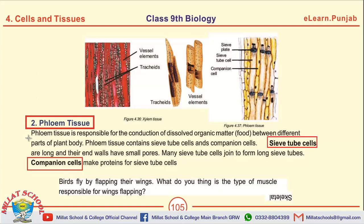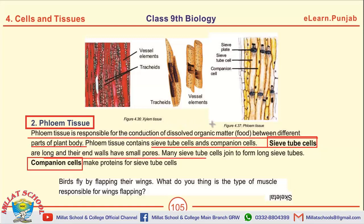The last tissue we will discuss today is phloem tissue. Phloem tissue is responsible for the conduction of dissolved organic matter or food between different parts of the plant body. Phloem tissues have sieve tube cells and companion cells. Sieve tube cells are long and their end walls have small pores — they form long sieve tubes by joining together. Companion cells are responsible for making proteins for sieve tube cells.